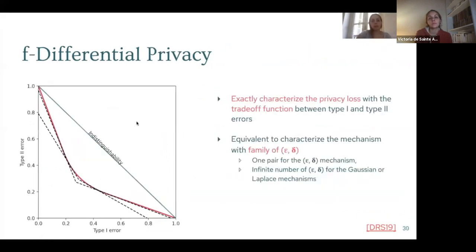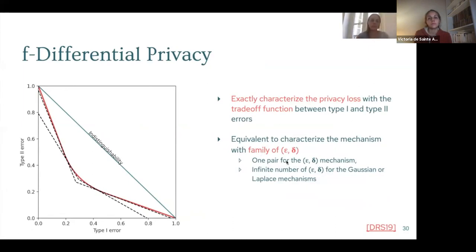f-differential privacy is about exactly characterizing the privacy loss not just with two parameters, but with the full trade-off function. This is equivalent to characterizing the mechanism with a family of epsilon-delta pairs, which may be finite or infinite.